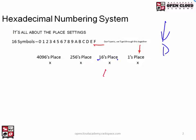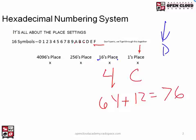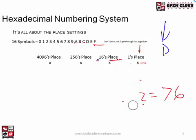Let's do a harder one: 4C. I've got my calculator since some of these get large. 16 times 4 is 64. C equals 12 in decimal. So 64 plus 12 is 76. We take the digit in each position, multiply it by the place setting — 1 for the ones place — and add them together to get the decimal equivalent.